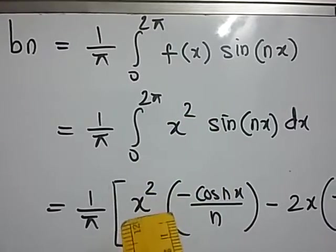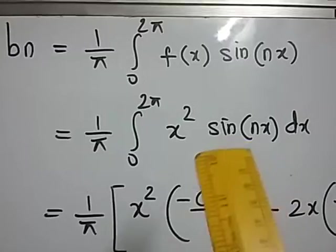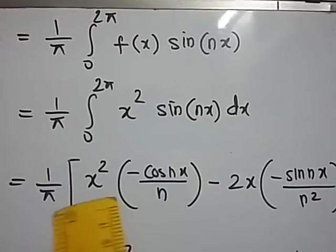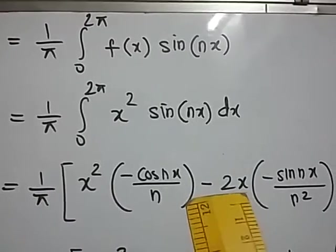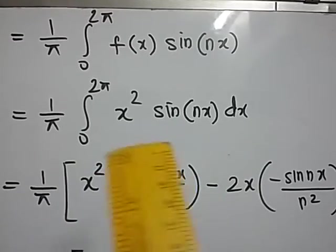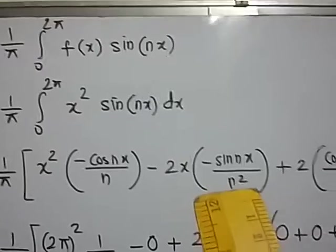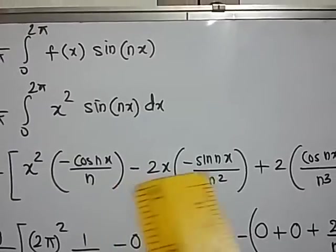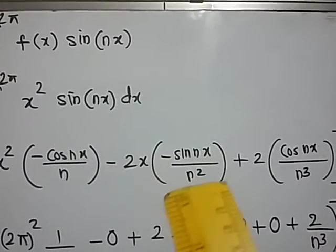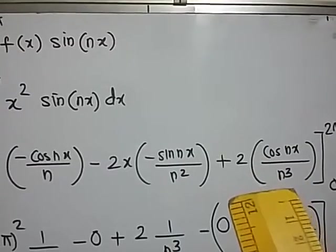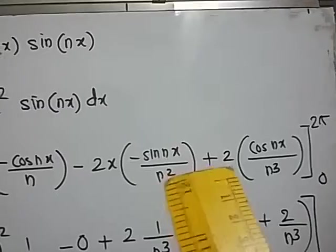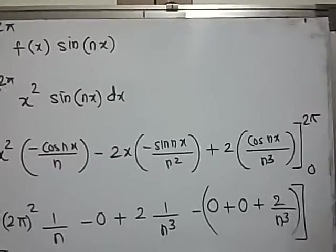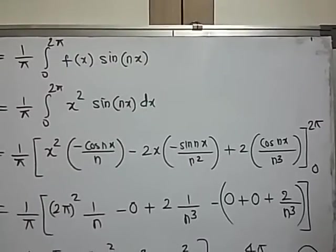So first I write u as it is that is x². Integral of sin(nx). What is integral of sin(nx)? It is minus cos(nx) upon n. Minus. What is derivative of x²? It is 2x. Then integral of this term. Integral of this term is minus sin(nx) upon n². Alternate plus minus. Next is plus. So what is derivative of 2x? It is 2. An integral of this term is cos(nx) upon n³. Next term will be having minus sign and the derivative of 2 which is a constant is going to be 0. So all other terms after this is 0. So this is being boxed between 0 to 2π.